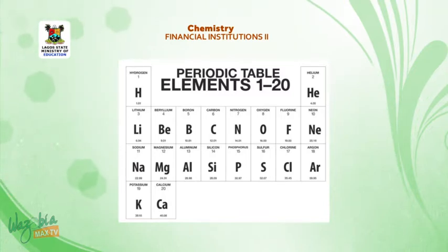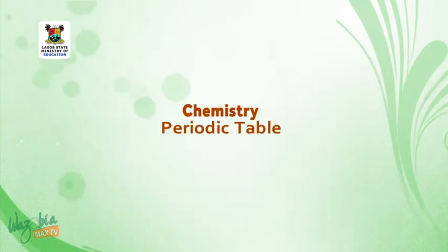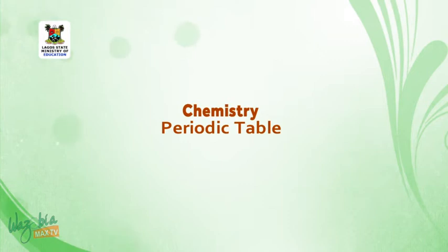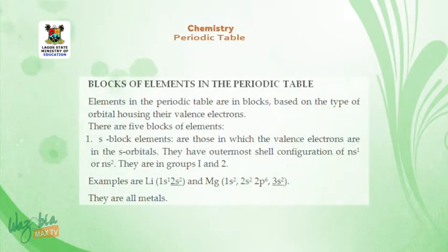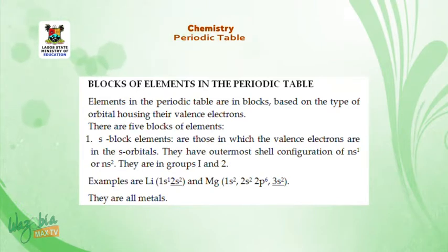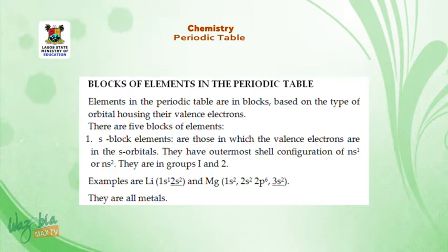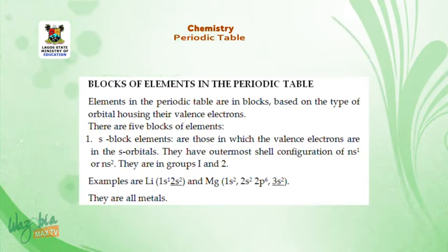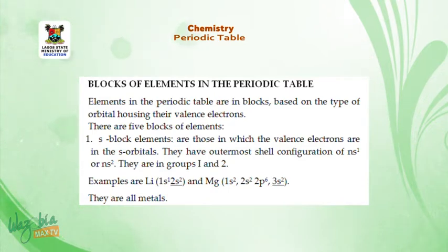After this short break, we are going to continue from blocks of elements in the periodic table. Welcome back. Elements in the periodic table are in blocks based on the type of orbital housing their valence electrons. There are 5 blocks of elements. Number 1, the S block elements — these are elements in which the valence electrons are in the S orbitals. They have outermost shell configuration of NS1 or NS2 and are in groups 1 and 2.